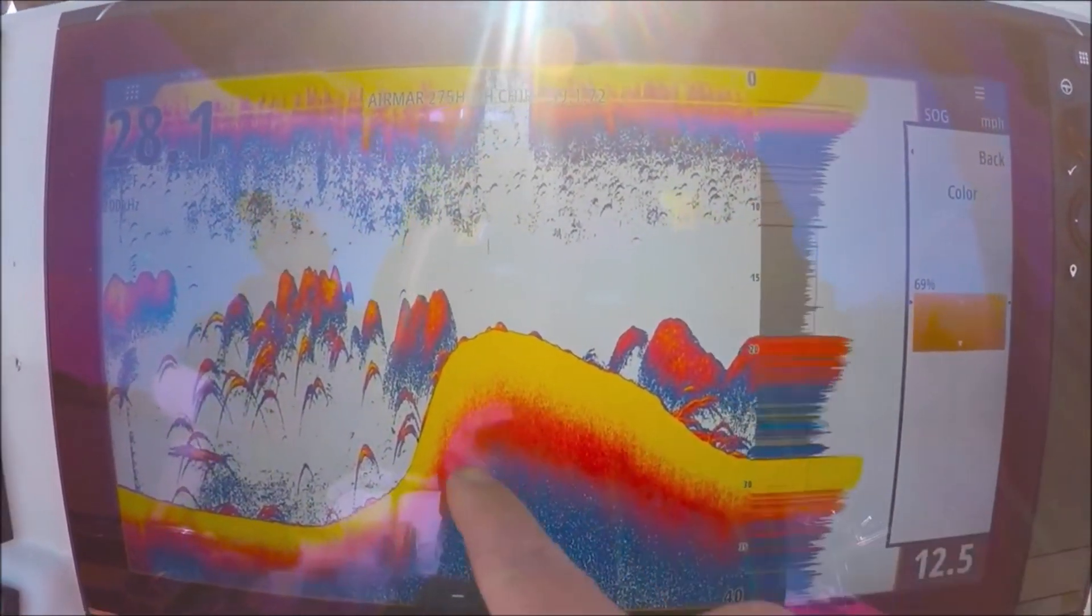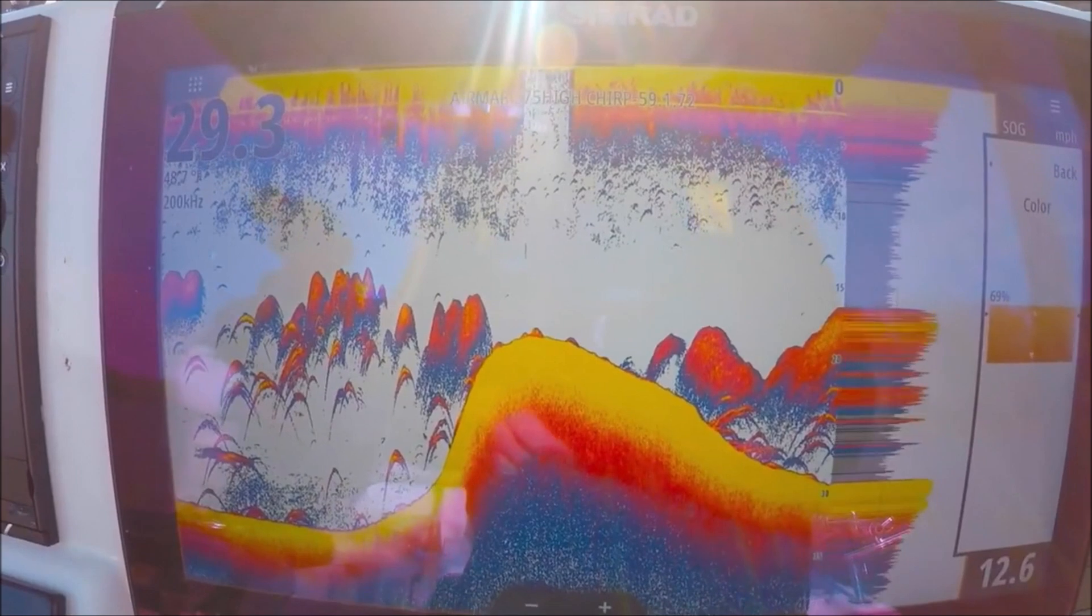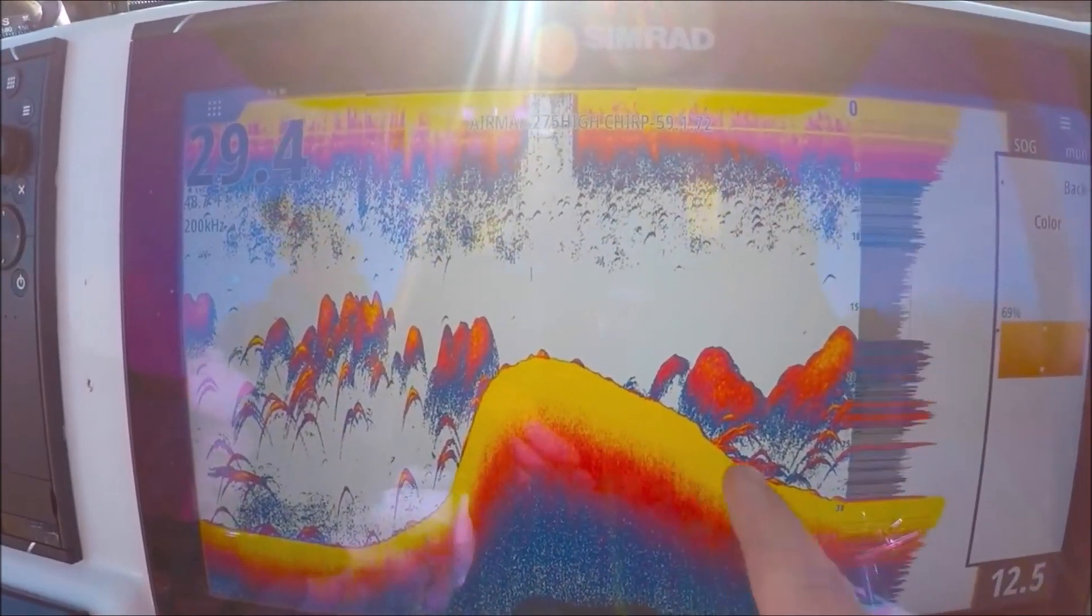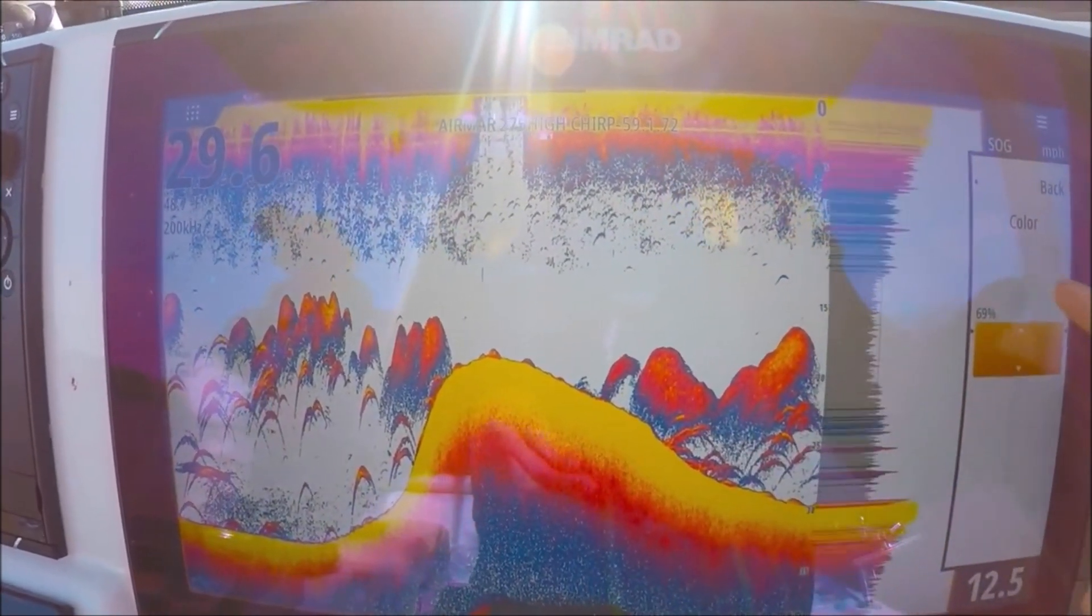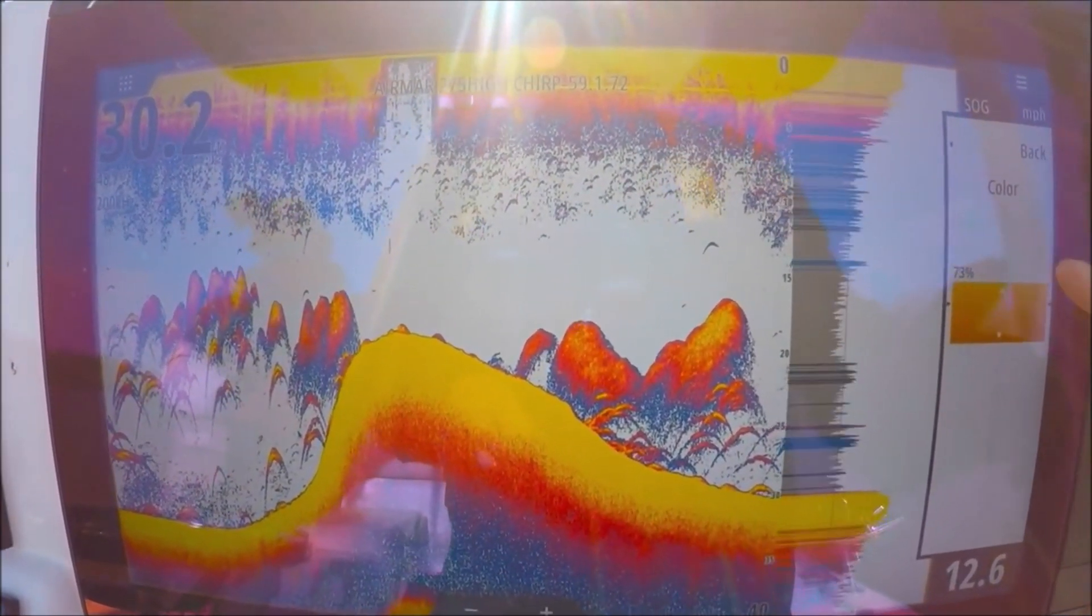So these are solid marks here. These are air bladders and fish. These should be yellow because we know those are good returns. Our solid color is yellow, so I want some yellow in my arches. So I'm going to turn my color up until I start to see yellow in them.